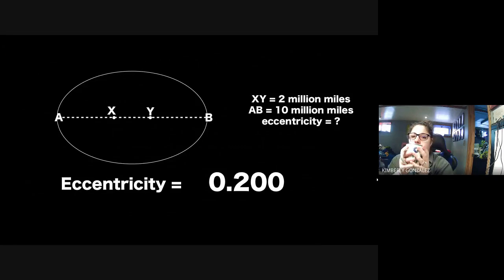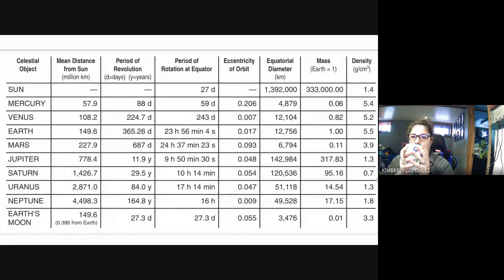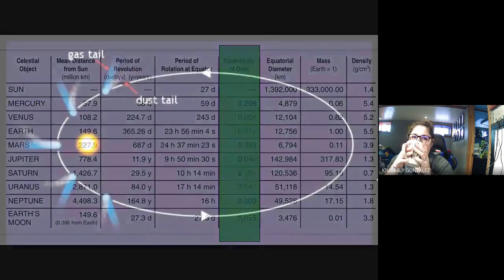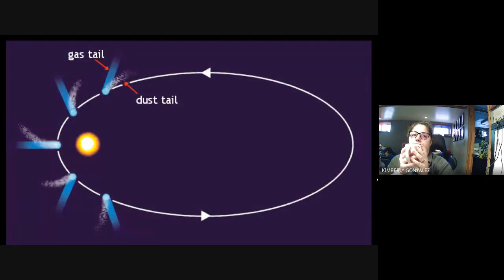For example, if the focal distance is 2 million miles and the major axis is 10 million miles, eccentricity equals 0.200. Always go to three decimal places — to the thousandths place. A low eccentricity means the orbit is nearly circular. The eccentricity values are on page 15 of your reference table. Mercury has the flattest orbit at 0.206; Venus has the roundest orbit because it's closest to zero. Comets have the most highly elliptical — highest eccentricity — orbits in the solar system.